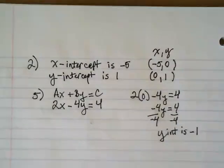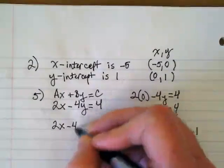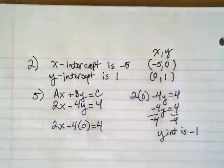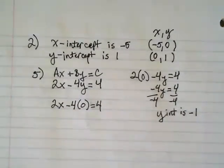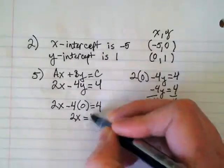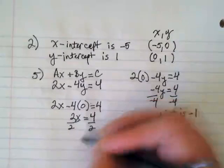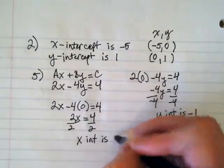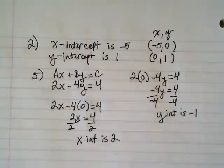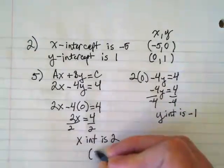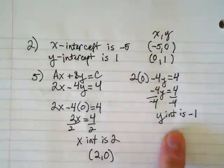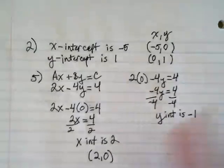We're going to do the same thing to find the x-intercept. We're going to replace y with 0. So 2x minus 4 times 0 equals 4. What is that going to leave us with? 2x equals 4. What are we dividing by this time? 2. The x-intercept is 2. Or what we're saying is when the y is 0, the x is equal to 2. That means this coordinate pair would be 2, 0. And this one's pair would be 0, negative 1.